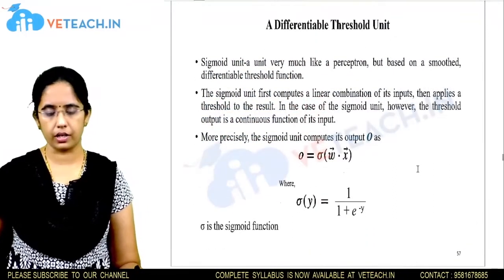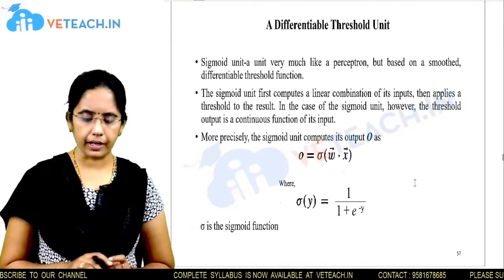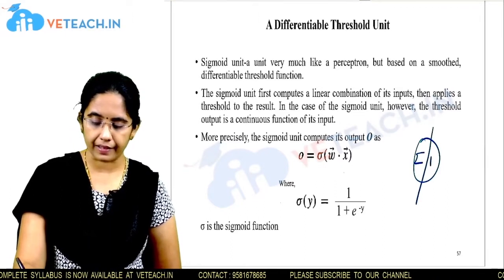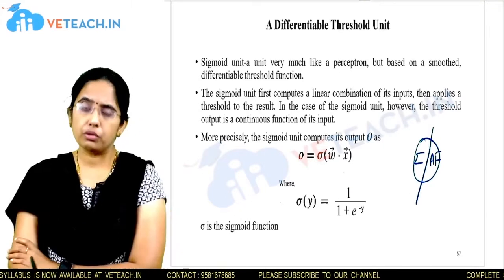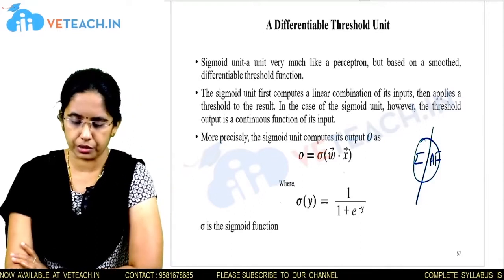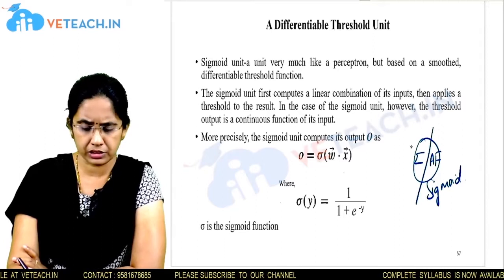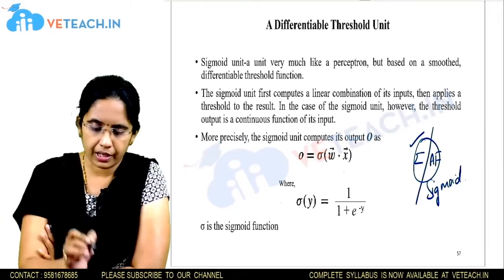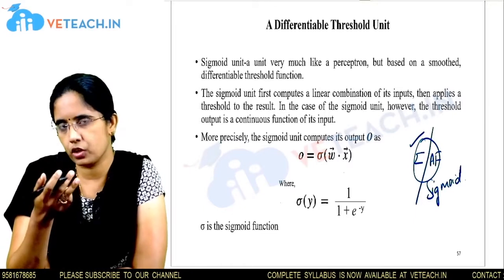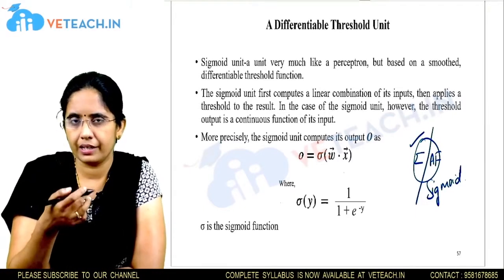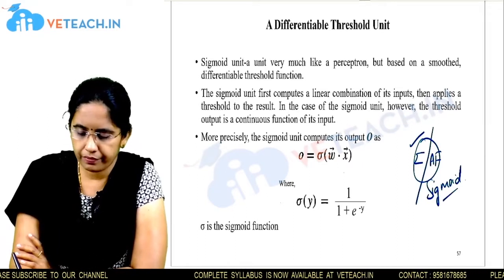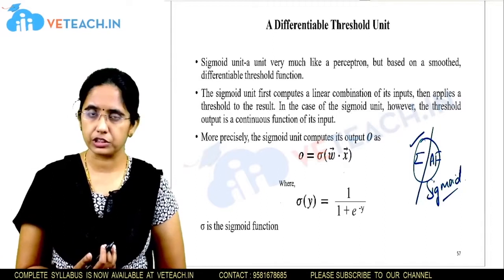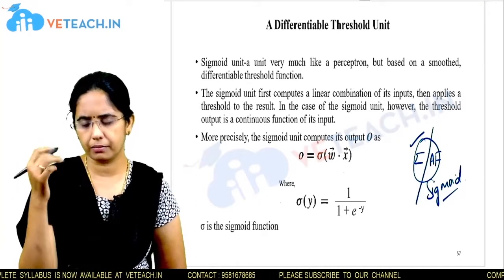We need to train this model. Before that, we'll discuss that a neuron in a neural network generally consists of two parts: the aggregation part and the activation function part. The activation function used in multi-layer neural networks is the sigmoid function. In the perceptron we used a step function, but in multi-layer neural networks we use the sigmoid function. You can use any activation function, but here we are using sigmoid.